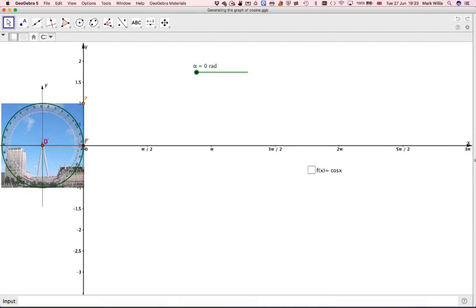In this video, we're going to generate the graph of cosine. Let's just have a look to see. Now, cosine, we've got to remember, is adjacent divided by hypotenuse.